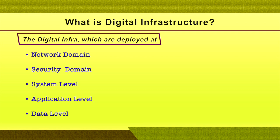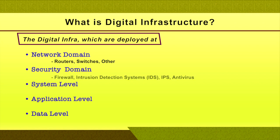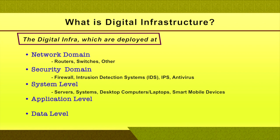The infrastructure deployed at the network domain includes routers, switches and so on. Similarly, at the security domain, the devices are firewall, intrusion detection systems, intrusion prevention systems, antivirus and so on. At the system domain, the infrastructure includes servers, desktop computers, laptops, smart mobile devices and so on.